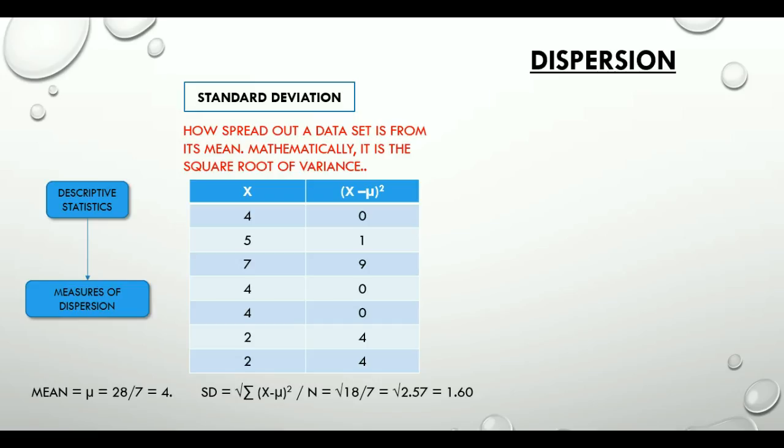If we calculate the sample standard deviation, there is a slight change in the formula. Mu here becomes x bar for a sample, and n becomes n minus 1. This change from n to n minus 1 is called Bessel's correction in statistics.